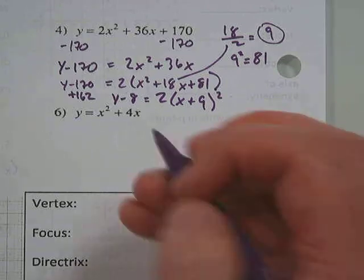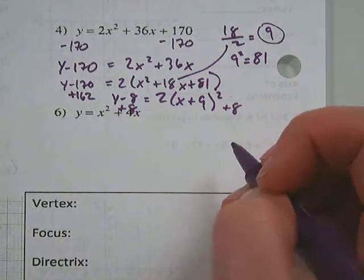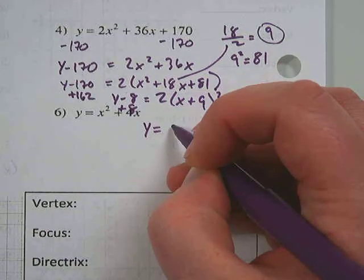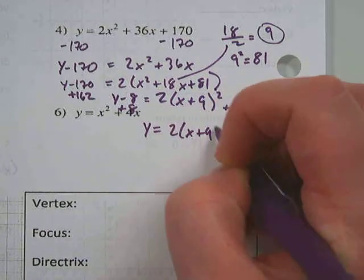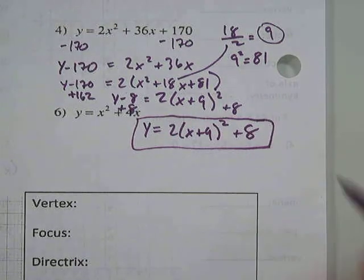Our last step is just to add 8 back to both sides to make it say y equals again. So then we get y equals 2 times x plus 9 squared plus 8 for our final answer.